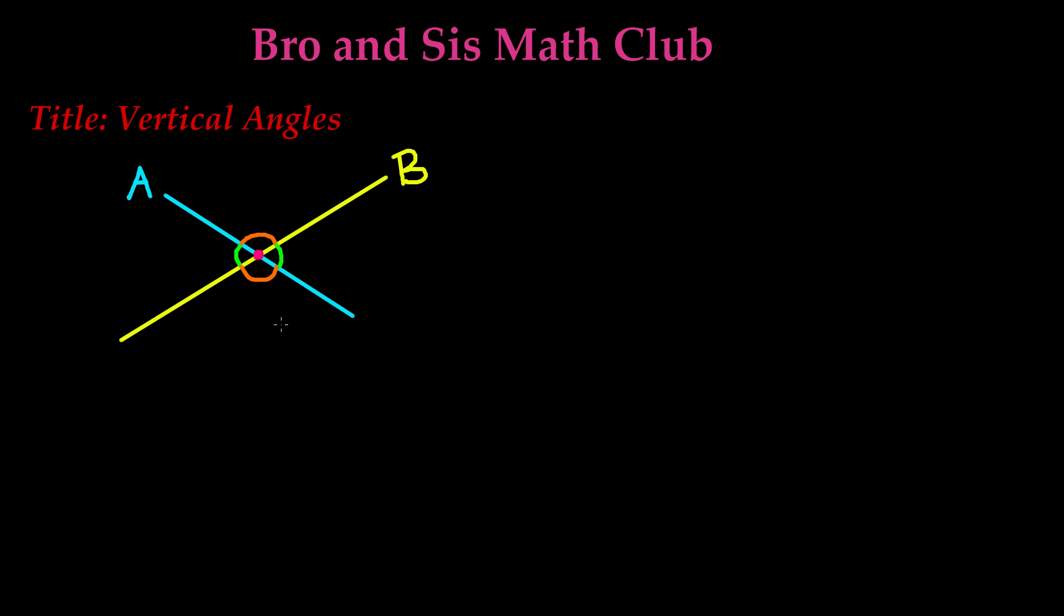There are two pairs of vertical angles in this intersection. Our very first pair is represented by the green. These are two angles that are vertical of each other.